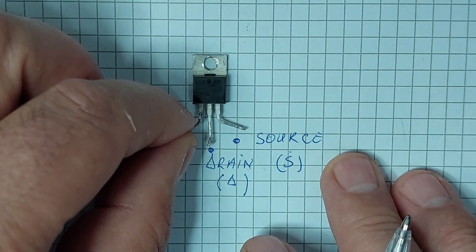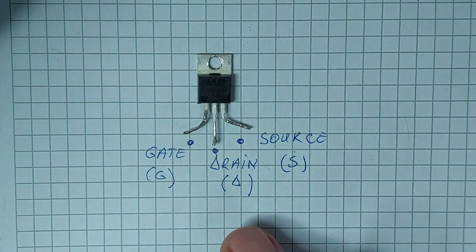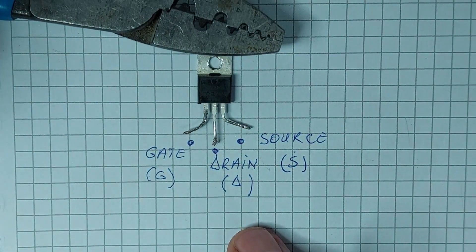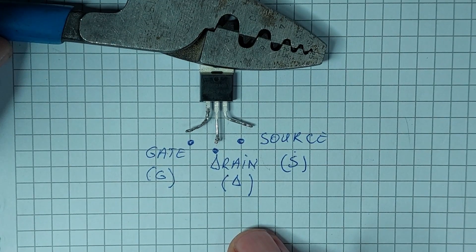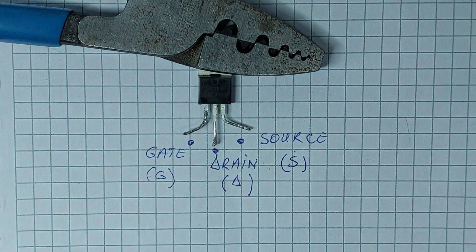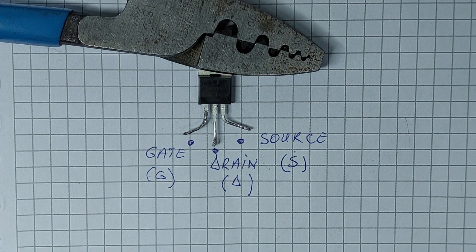By applying a small voltage at the gate, we can control a larger current flow between the drain and source. In today's setup, we'll use this property to control an LED, showing how the MOSFET can act as a simple switch.